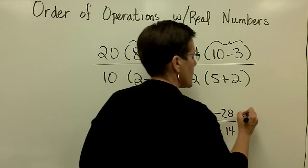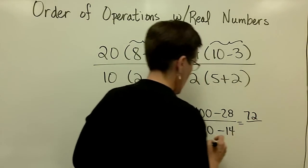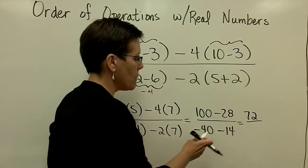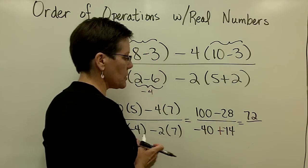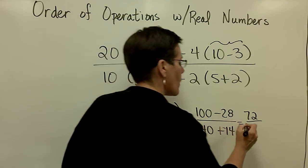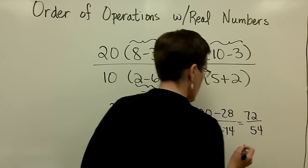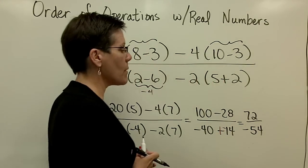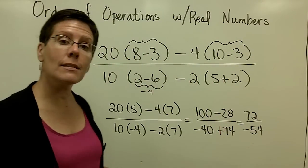Upstairs, 100 minus 28 is 72. And a negative 40 minus 14 or plus a negative 14. Their signs are the same, so I add their absolute values. I give my answer that common sign.